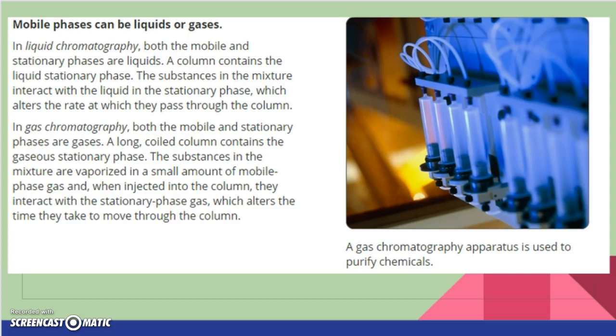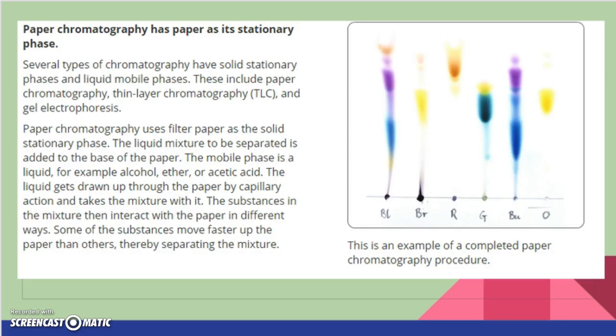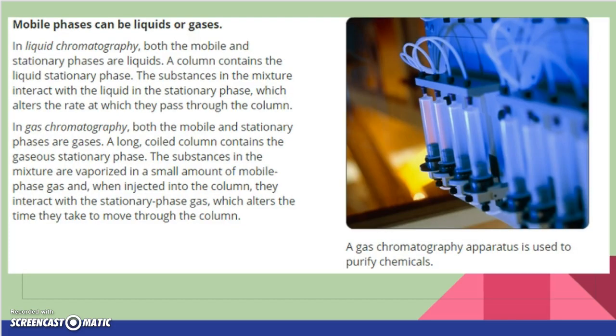In gas chromatography, both the mobile and stationary phases are gases. So now we're separating two gases. A long coiled column contains a gaseous stationary phase. The substances in the mixture are vaporized in a small amount of mobile phase gas and then injected into the column. They interact with the stationary phase gas, which alters the time they take to move through the column. So it's a lot more complex than just putting marker on paper. So just kind of interesting. Wanted to make sure you guys at least heard about that.